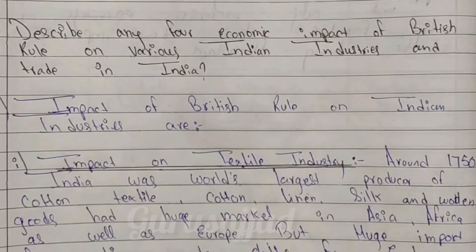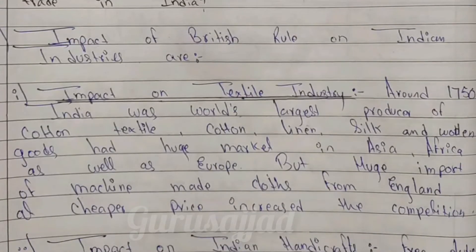Describe any 4 impacts of British rule on various Indian industries and trade. First is the impact on the textile industry. Because of British goods coming from abroad without tax, they were cheaper and machine-made. But Indian goods had heavy taxes imposed, so the charges increased and the industry collapsed.